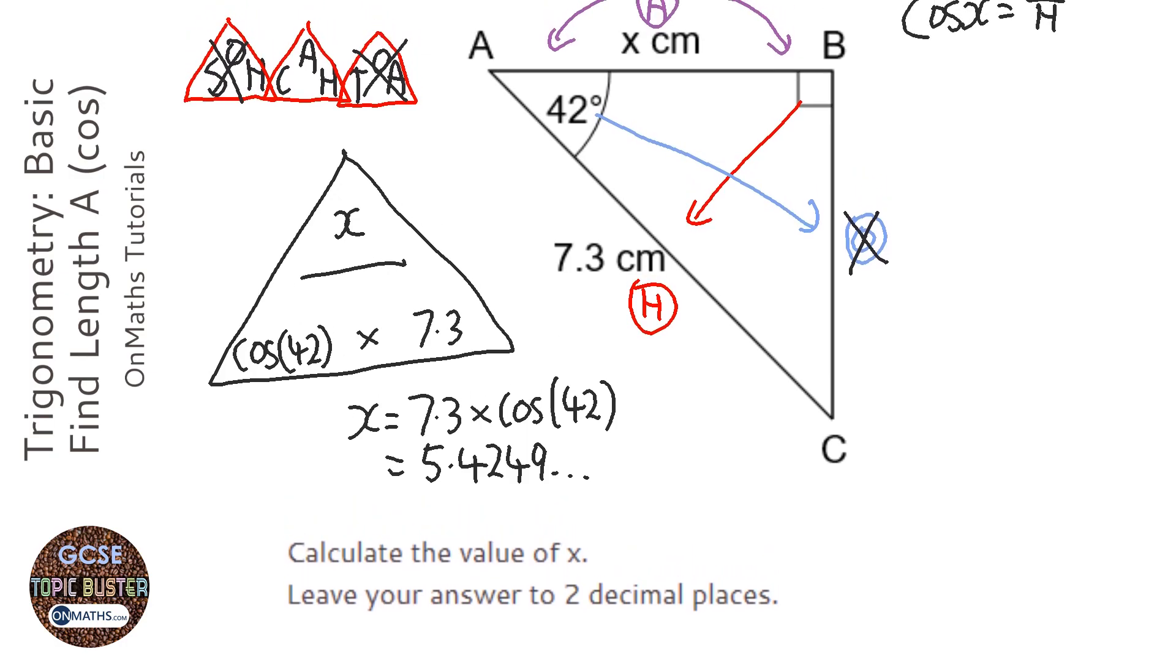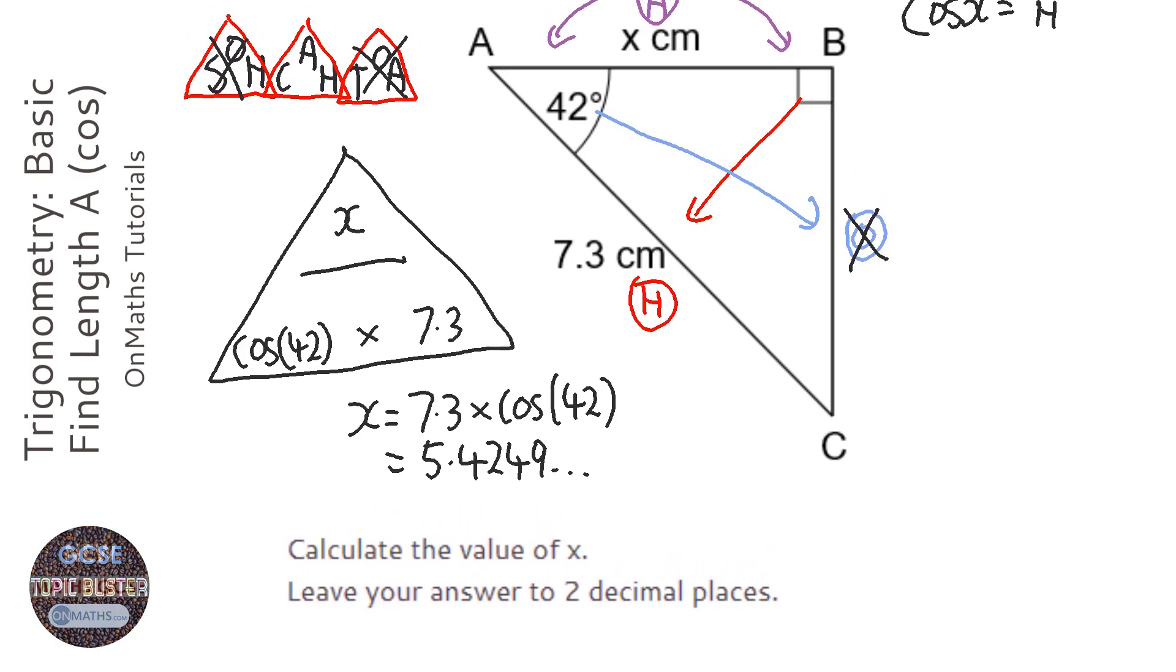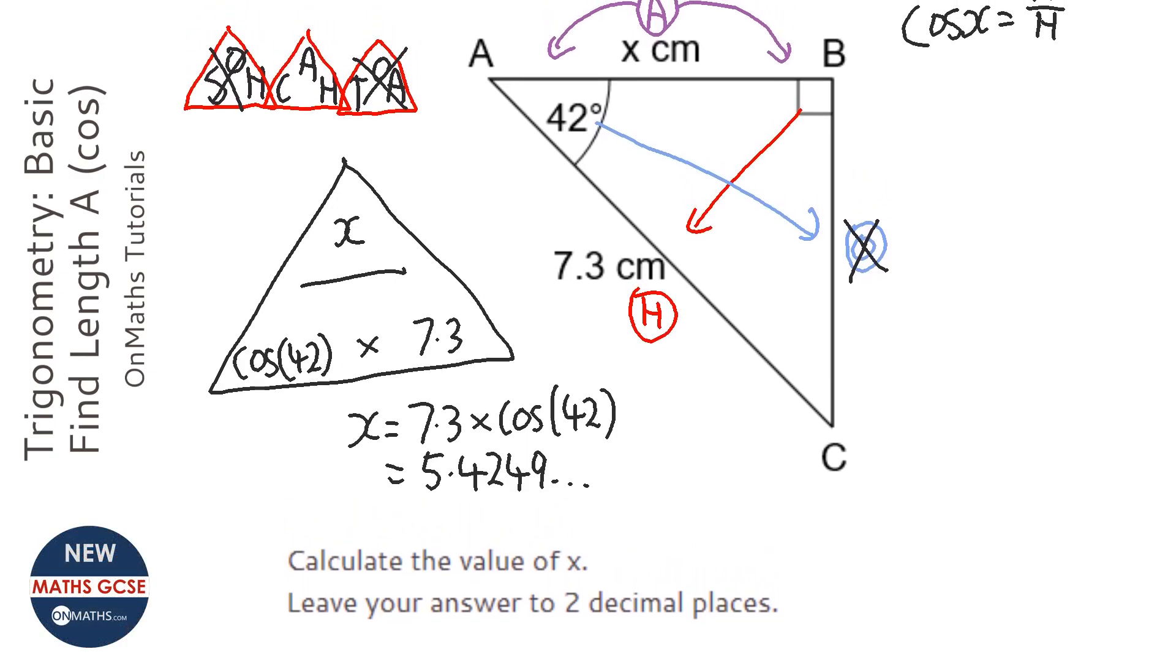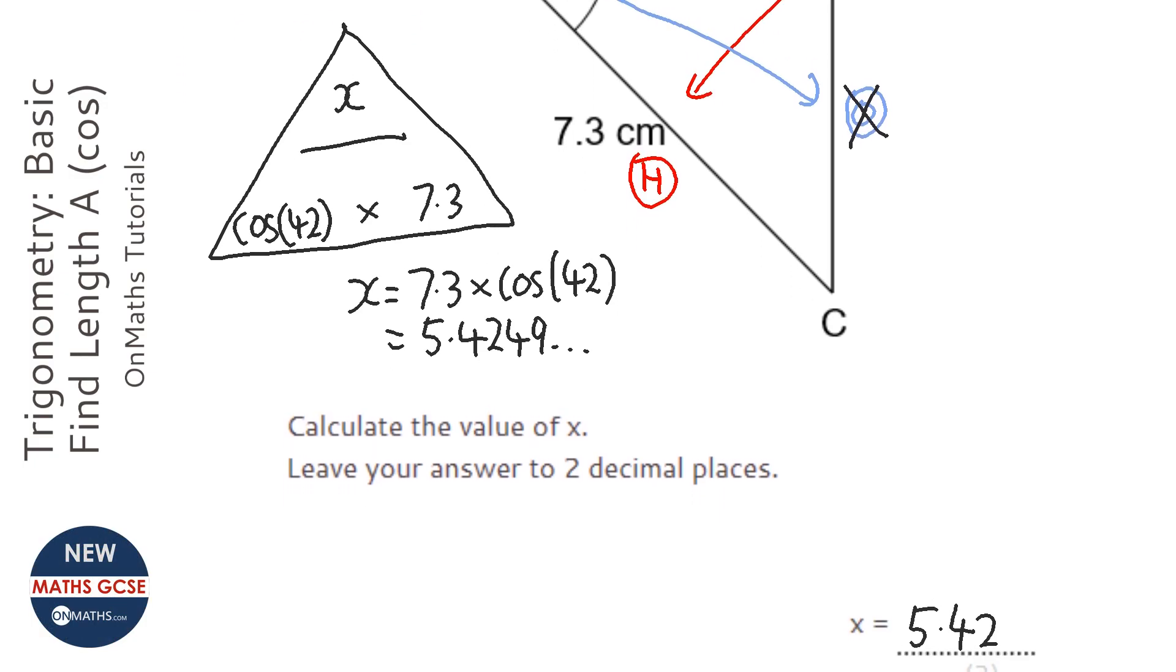Now last step is just to check it. The hypotenuse is 7.3, so the length that we're finding has to be less than that, which it is.